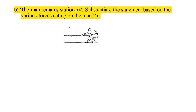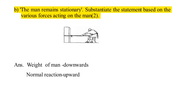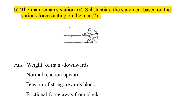The man remains stationary. The weight of the man acts downward. The normal reaction acts in the upward direction. The tension in the string acts towards the block. The friction force acts away from the block. The friction force balances the tension, keeping the man stationary.